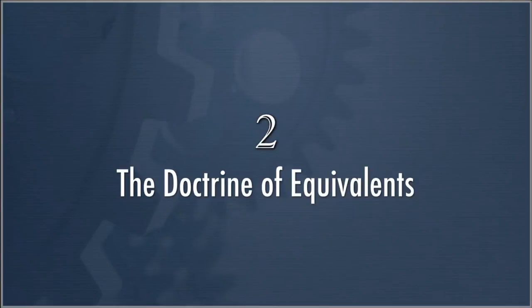Now that we've covered literal infringement, let's move on to the doctrine of equivalence. If you don't find literal infringement, that does not end the question of whether there's infringement, because you can still infringe under the doctrine of equivalence. You might ask: how did this develop? Don't the claims mean what they mean? I've said all along that the key to understanding patent scope was the claim — and now I'm telling you the claim is really not the full measure of scope. You get something else: equivalence.